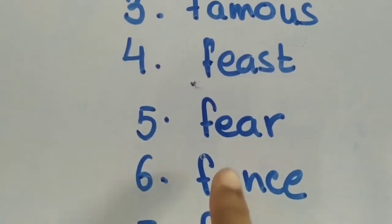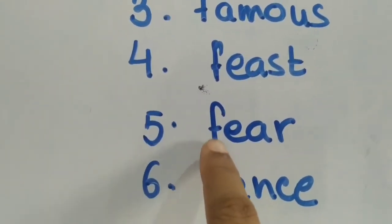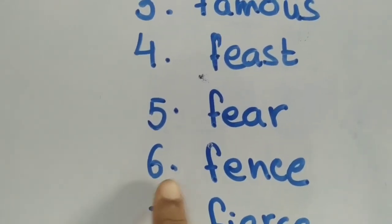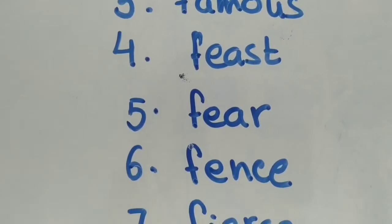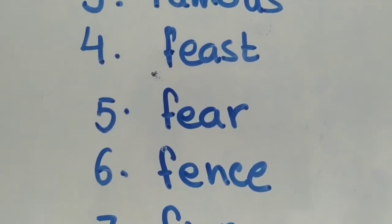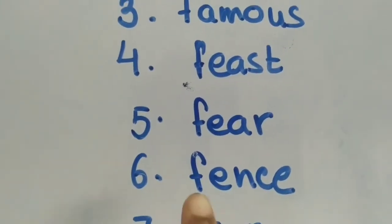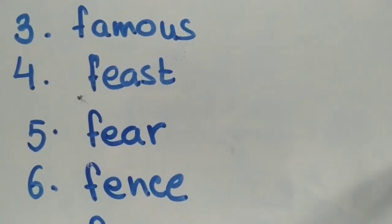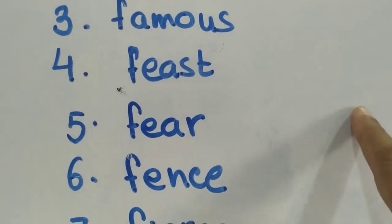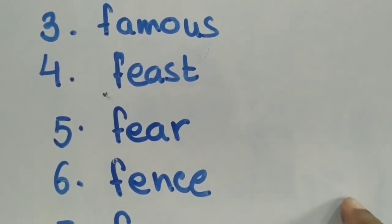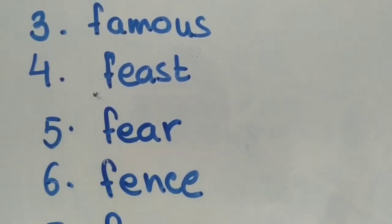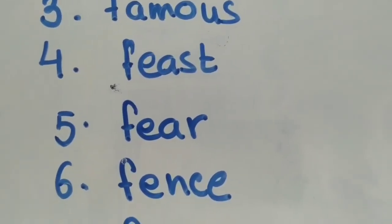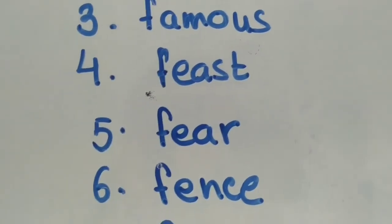F-E-N-C-E. Fence. Fence is the boundary of your house or some field. You know field? It is made of metal wire. That is called fence, so that no animals can come in.